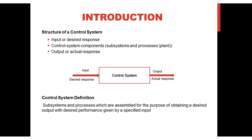Secondly, the control system components, which consist of subsystems and processes called plants, and lastly, the actual response or results referred to as outputs.